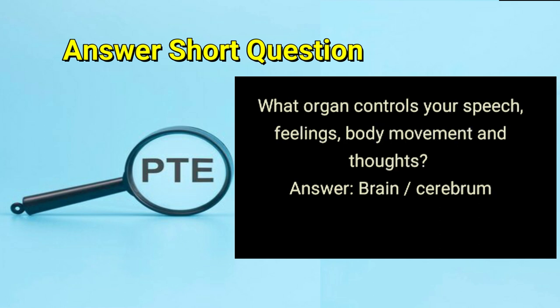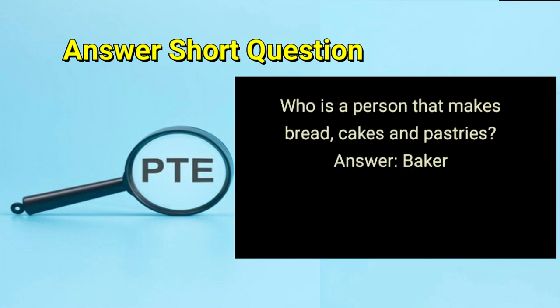What organ controls your speech, feelings, body movement and thoughts? Answer: brain or cerebrum. Who is a person that makes bread, cakes and pastries? Answer: baker.